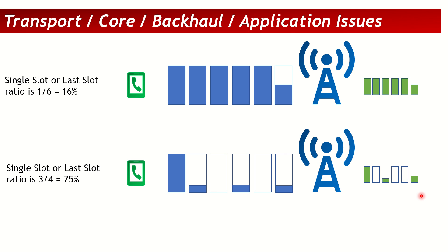That jump indicates that traffic which used to come in bigger chunks is now coming with higher variability or higher jitter, showing something has happened at the backhaul, transmission, or core side. With this technique, you can make an educated guess: if other KPIs are suddenly impacted, or customer complaints come in, and you check this single slot or last slot ratio and it has suddenly increased significantly, you can say the issue seems to be coming from the backhaul or core end and request the core network team to investigate.